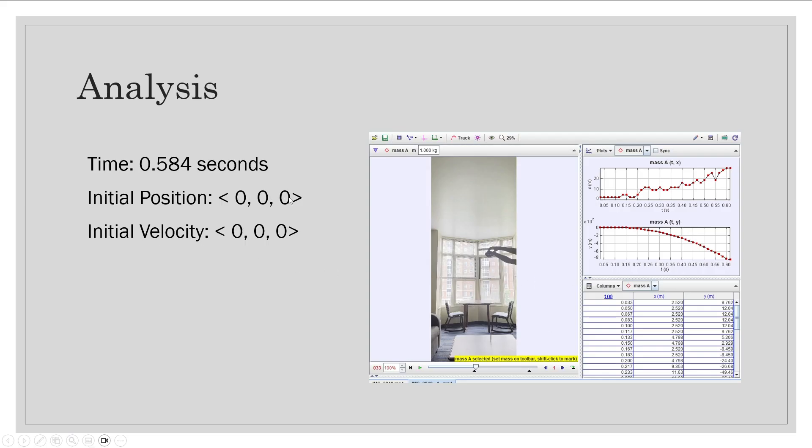We know our initial position is 0, 0, 0, because that's where we started. We know the initial velocity is going to be 0, 0, 0, because we didn't apply any force at that point.